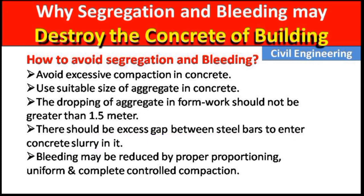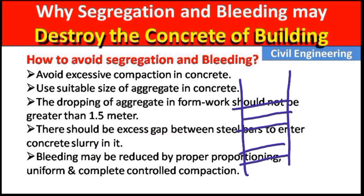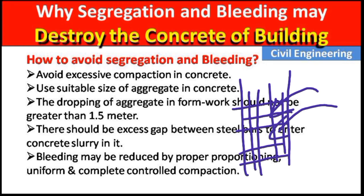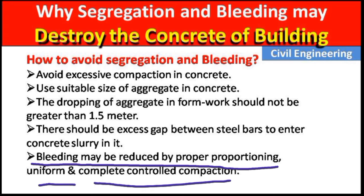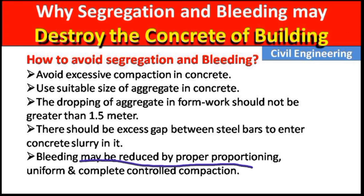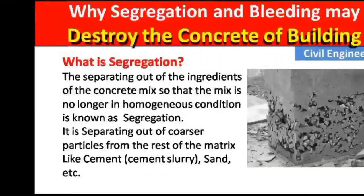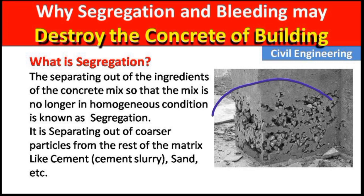There should be adequate gaps between steel bars to allow concrete slurry and aggregate to enter — for example, in a column with steel bars, there should be some gap in the steel to allow cement slurry and aggregate to pass through, preventing segregation. Bleeding may also be reduced by proper proportioning and uniform, complete compaction, meaning we must properly compact the concrete before removing the formwork.